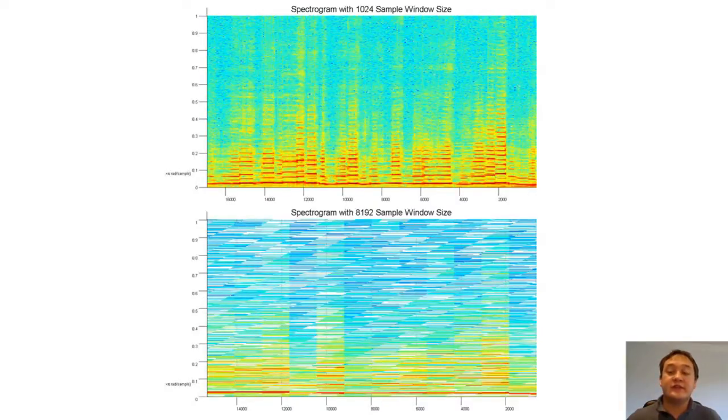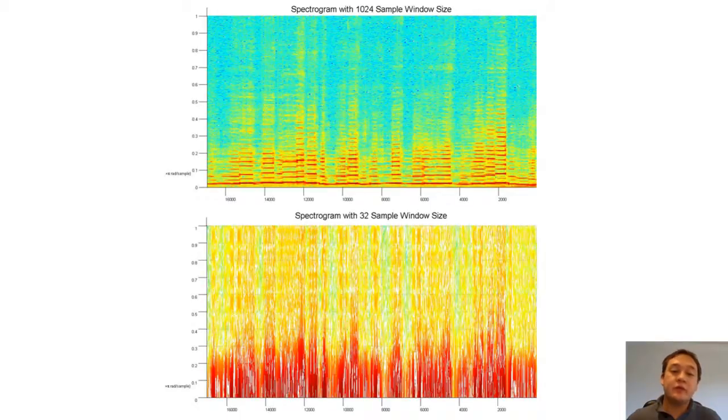If our window size is too small, we will lack the resolution to obtain a good picture of the frequency content. Notice how the 32 sample window size does not really give us a good indication of the high frequency content of the signal.